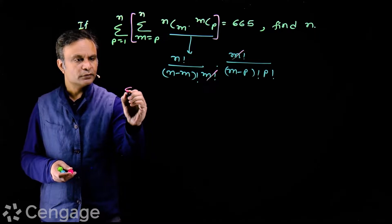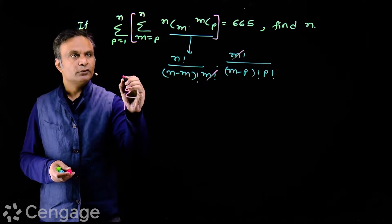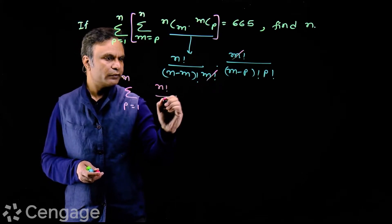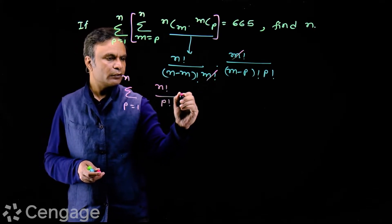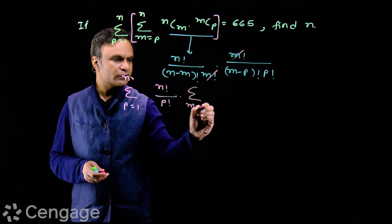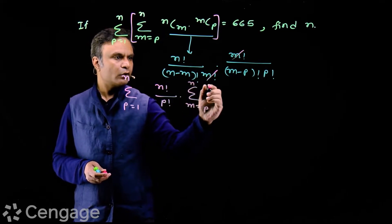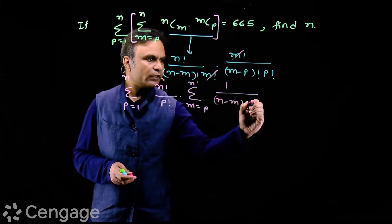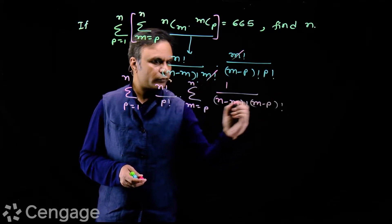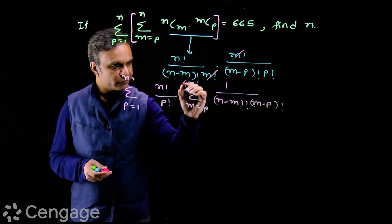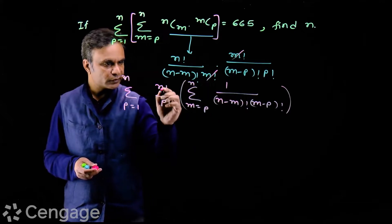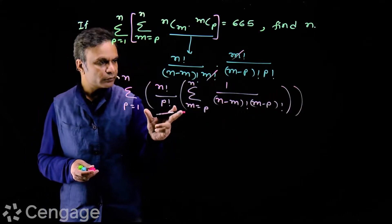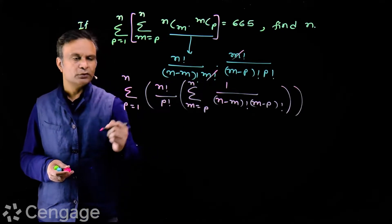So we have sigma for p equal to 1 to n of n factorial divided by p factorial, multiplied by sigma for m equal to p to n of 1 over (n minus m) factorial multiplied by (m minus p) factorial. Basically we have this inner sigma, multiplied by n factorial over p factorial, and then we apply the outer sigma for p equal to 1 to n.